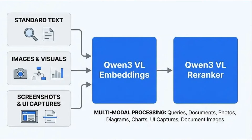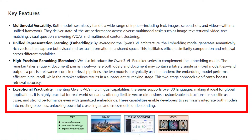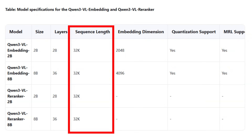You could imagine mixing modalities being really useful when you have an image and want to ask a question about it, and then find the closest text or image in your database. The models support 30-plus languages — Qwen has really committed to multilingualism beyond just English and Chinese. They also have a 32k context window, so you can put in pretty large documents.